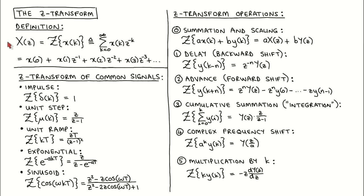We start with the definition of the Z-Transform. The Z-Transform of signal X of K is written as capital X parameterized in terms of the complex variable lowercase z. The Z-Transform is defined as the infinite sum from K equal to 0 to infinity of signal X of K times Z to the power minus K. Written out as a series, the Z-Transform is the value of signal X at time step 0, plus the value at time step 1 times Z to the minus 1, plus the value at time step 2 times Z to the power minus 2, etc.